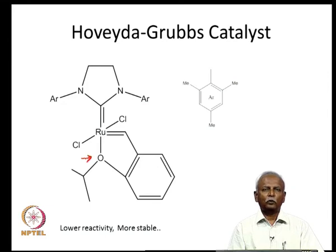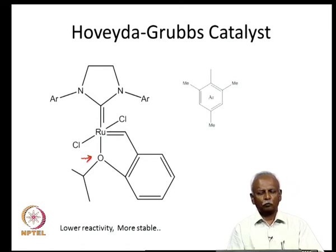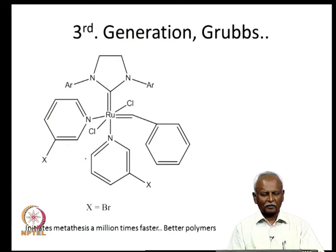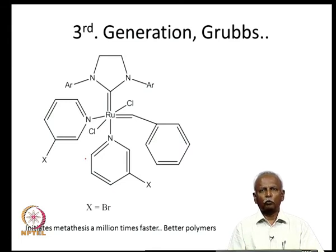When designing a catalyst, it is very important to make it as reactive as possible, but also to give it a long shelf life — what we consider stability. However, these two things often work at cross purposes: if you make the complex very stable, it will be less reactive. After Hoveyda made this modification, the second-generation Grubbs catalyst was the most useful, but not very reactive. Grubbs showed that if you replace the pendant group with a substituted pyridine — specifically bromopyridine — it turned out to be an extremely useful catalyst, initiating metathesis a million times faster than the second-generation catalyst.